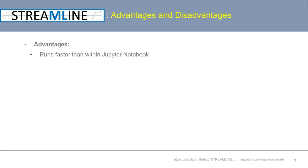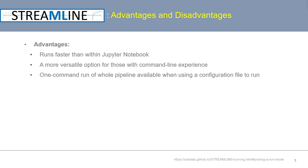Regarding advantages and disadvantages, running from the command line typically runs faster than using a Jupyter notebook. It's also generally considered a more versatile option for those with command line experience, and you can still run the entire Streamline pipeline with a single command using a configuration file to assign run parameters.